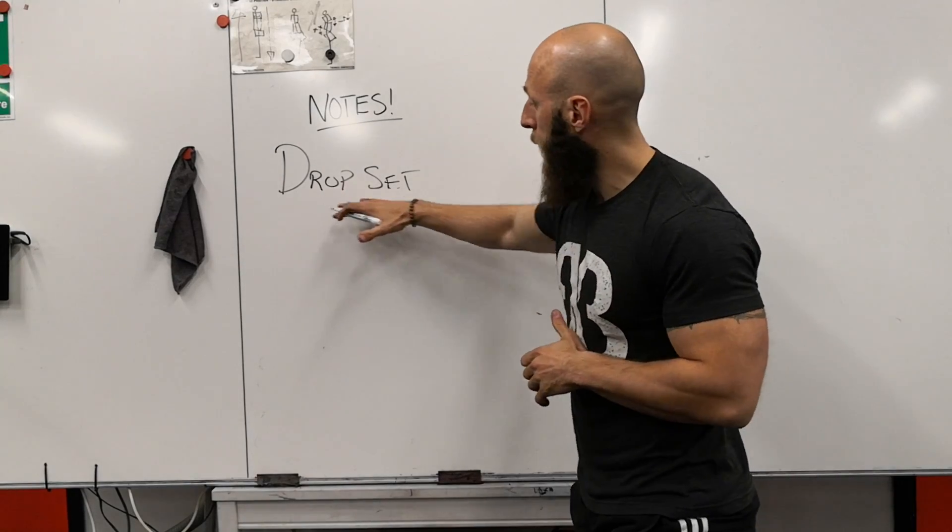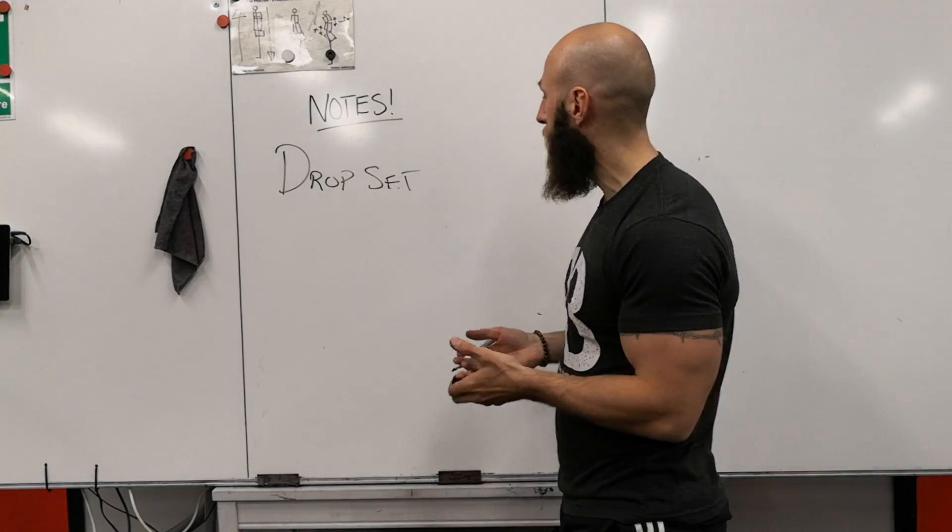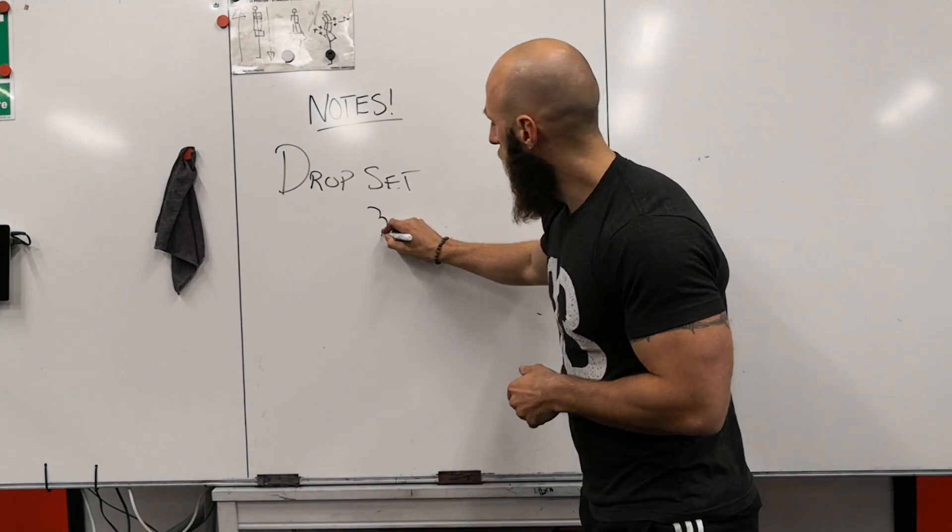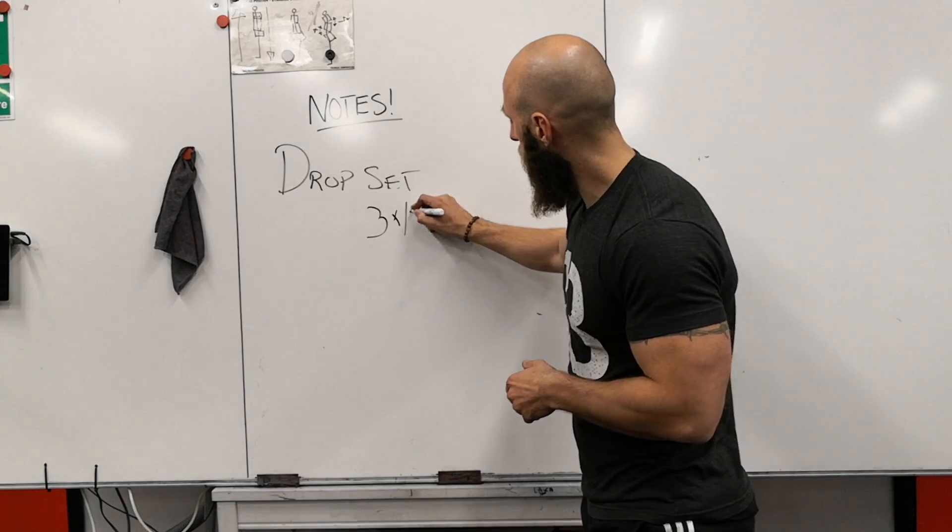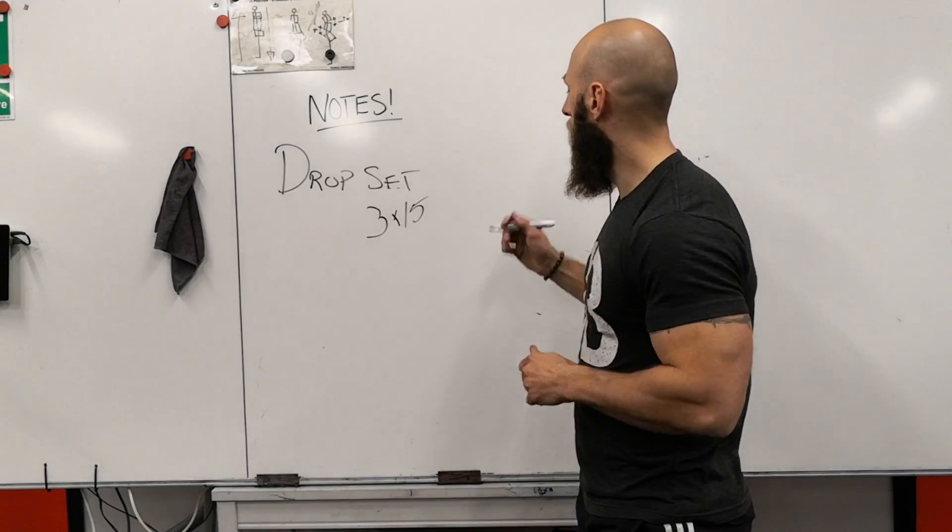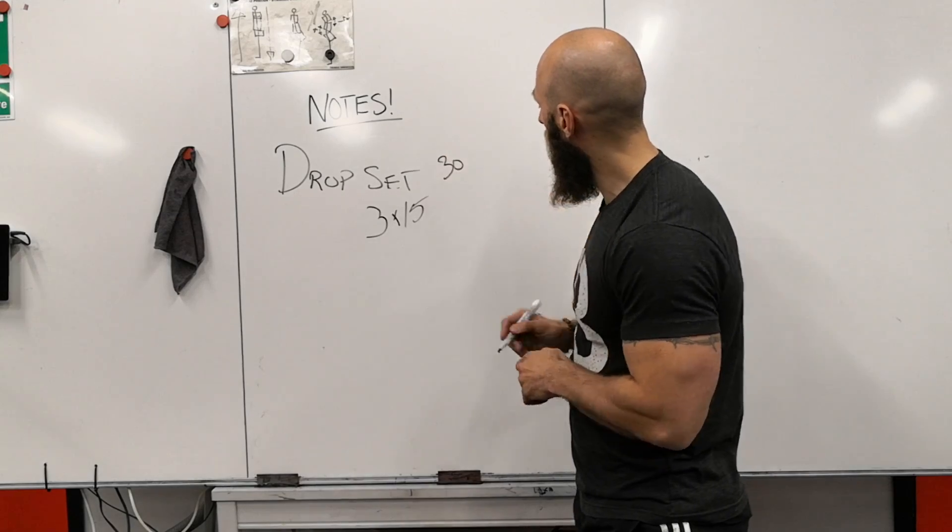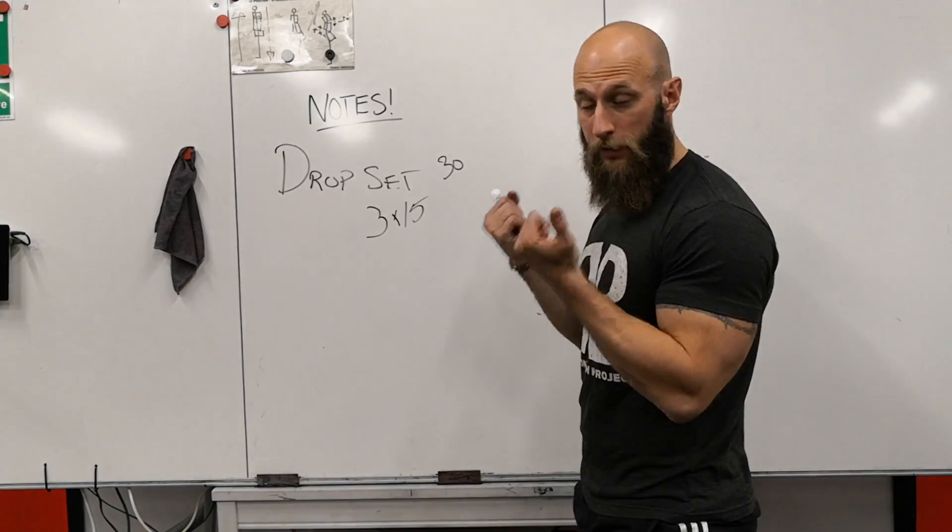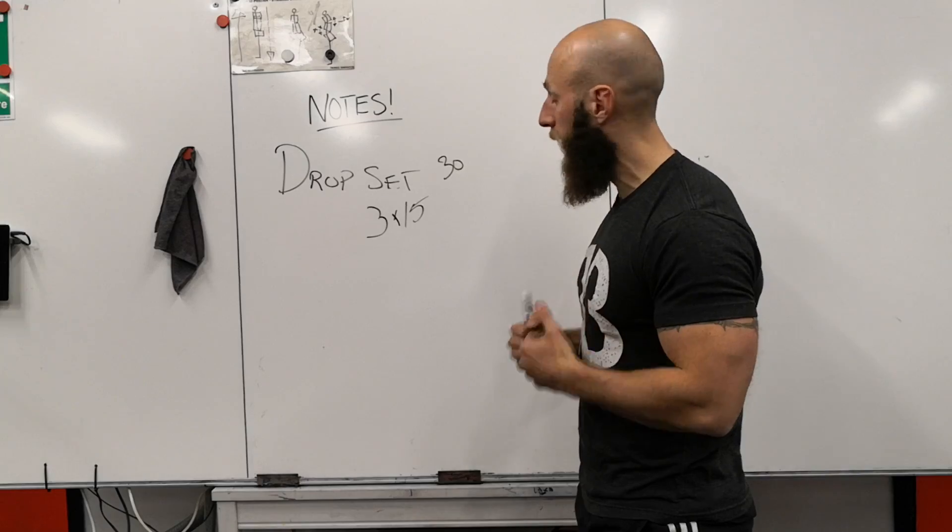And if we apply the drop set, let's say we have the bicycle for example. Let's say it says 3 sets times 15 reps. Let's say I use a 30 kilo weight. So I'm going to do 15 reps with my 30 kilo weight.